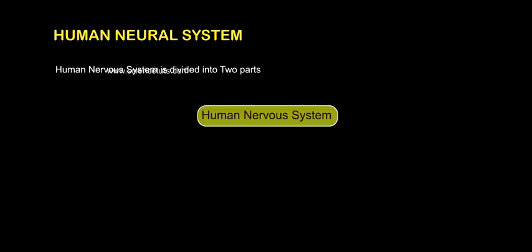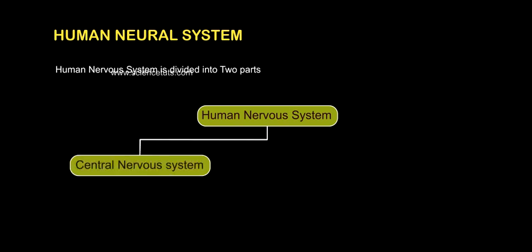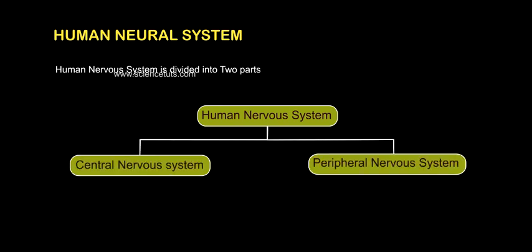Human Nervous System is divided into two parts: 1. Central Nervous System, 2. Peripheral Nervous System.